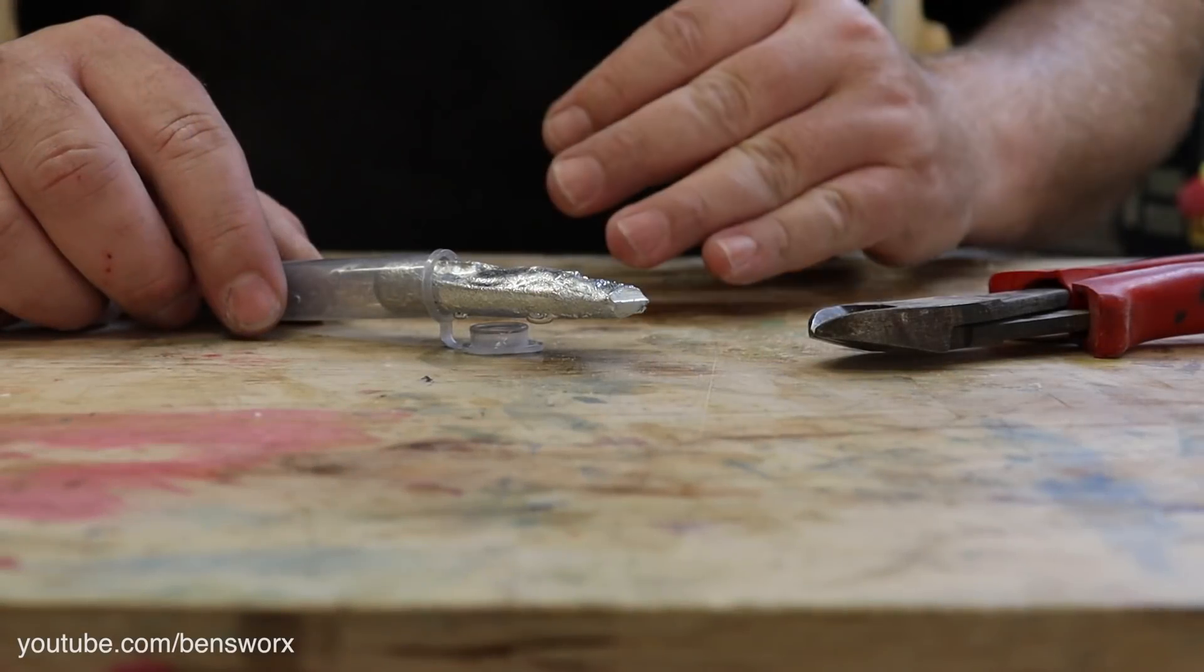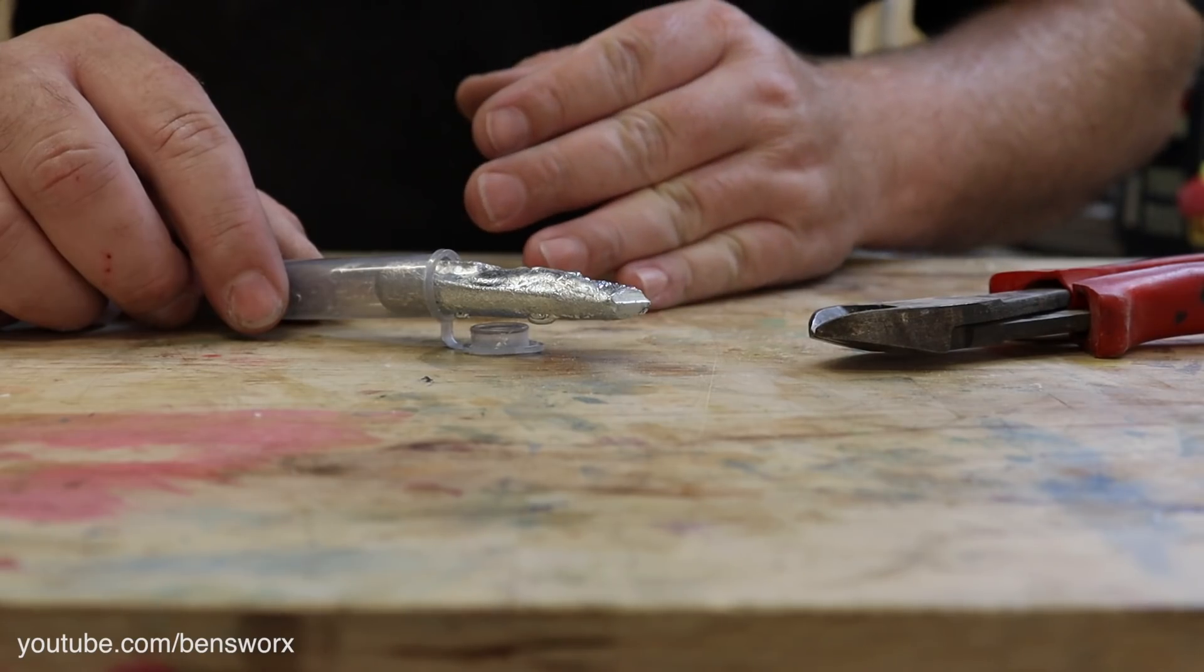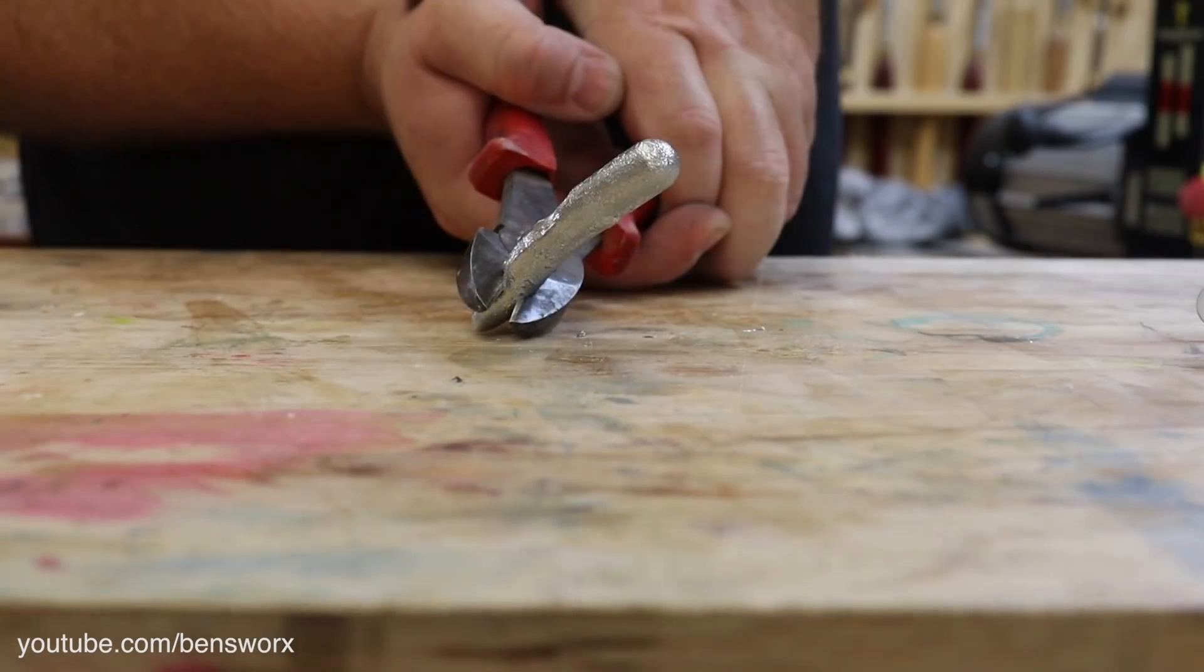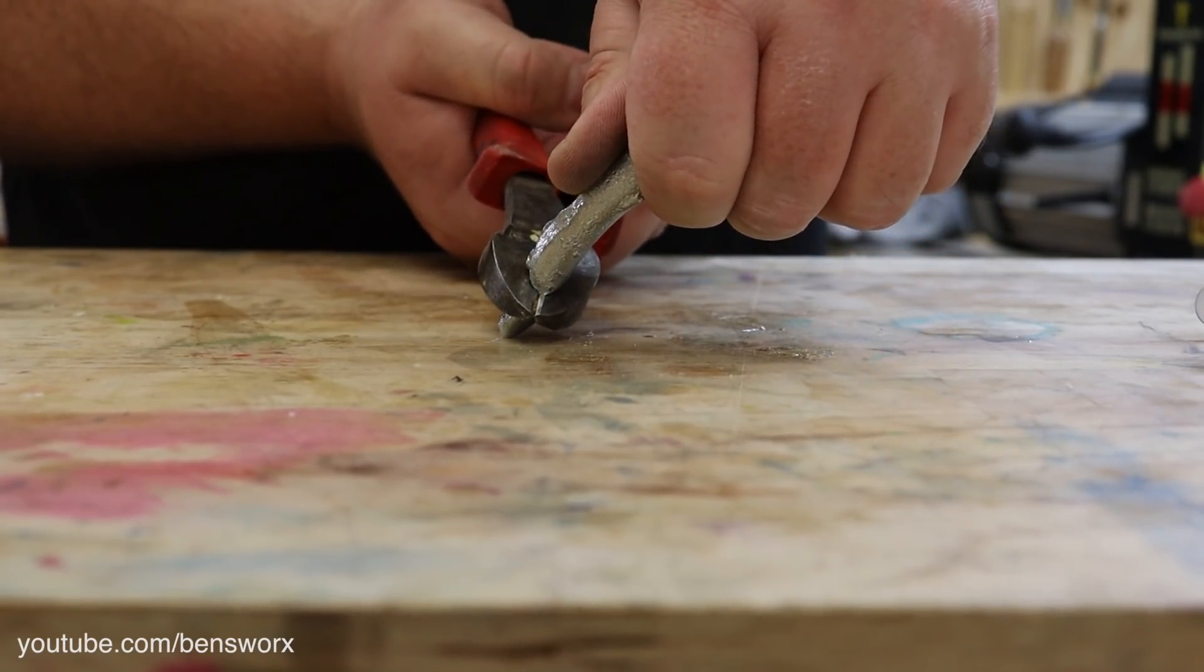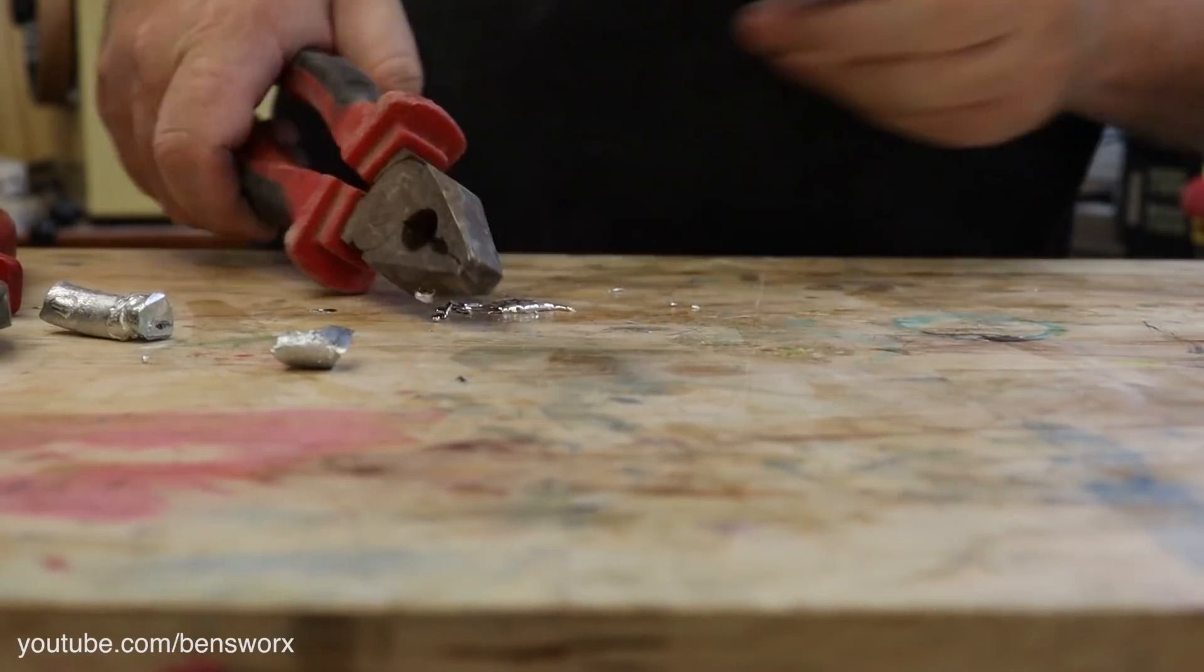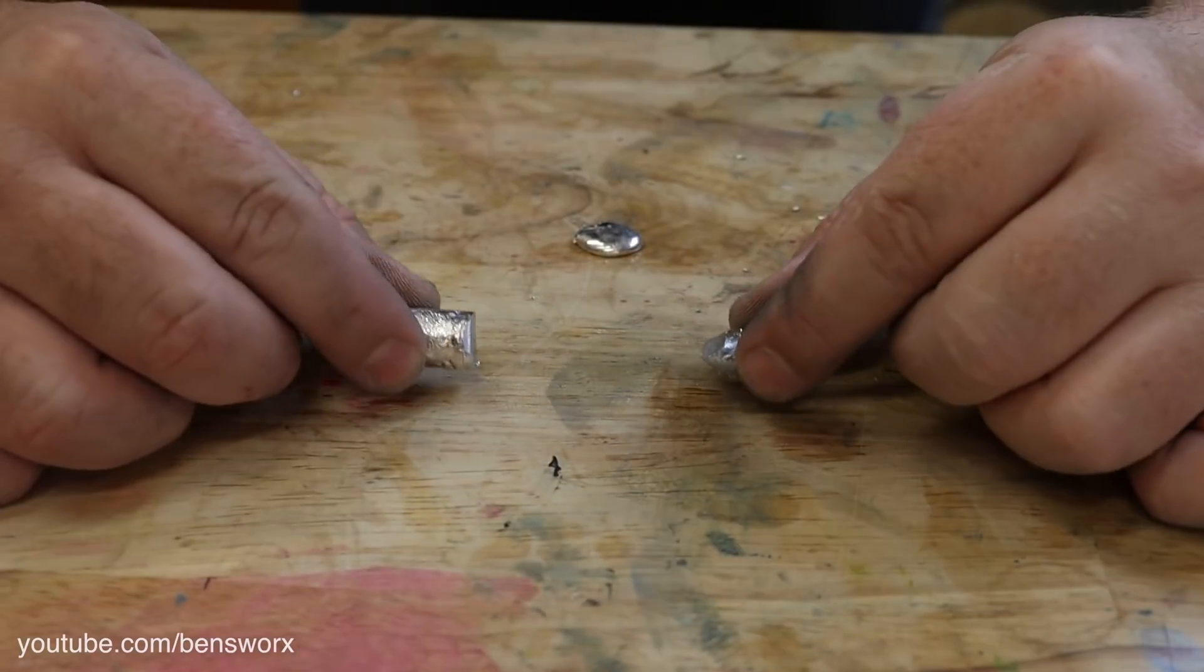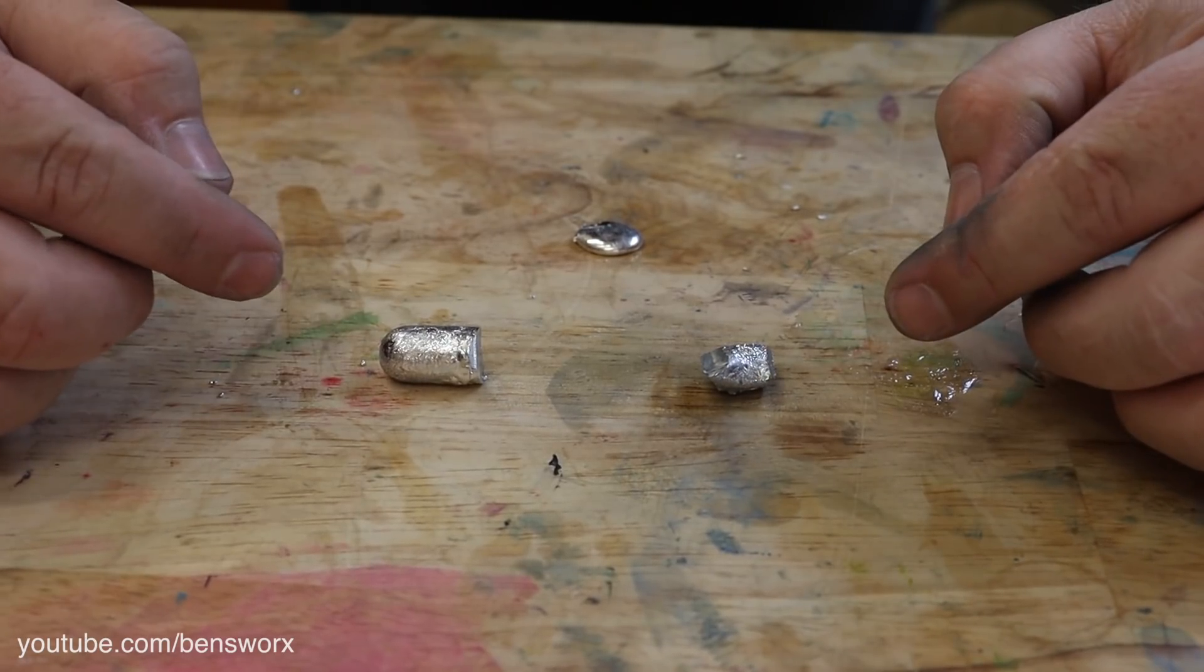While that's in the pot, let's prep our gallium for casting. Now I'm going to cut off two chunks, one a bit smaller than the other. So now that we've got our two pieces, we can pull the base out of the pot and start casting the gallium.